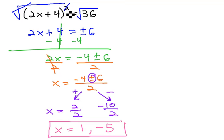So again, we cleared the square by taking a square root of both sides, which generated that plus or minus 6.